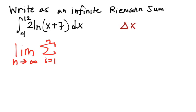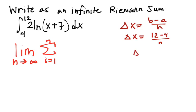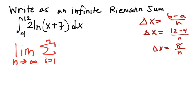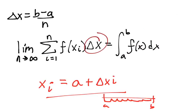So delta x is defined as b minus a over n. We don't know what n is — notice if you were asked to approximate this, you'd be given a certain finite number of rectangles. But generically, b minus a would be 12 minus 4 over some number n, and that simplifies to 8 over n. So now we have the last part of our Riemann sum — at the very end we're going to have 8 over n.